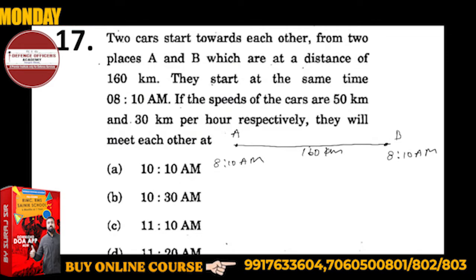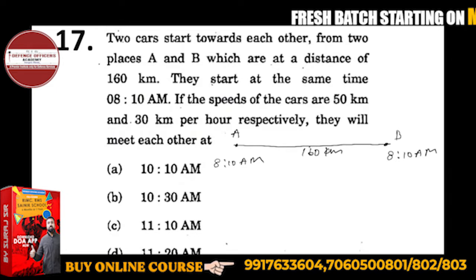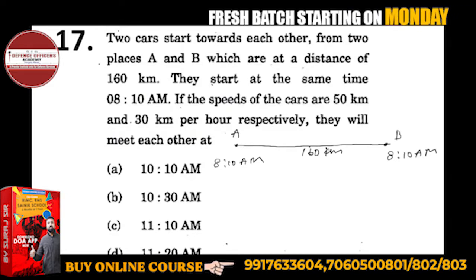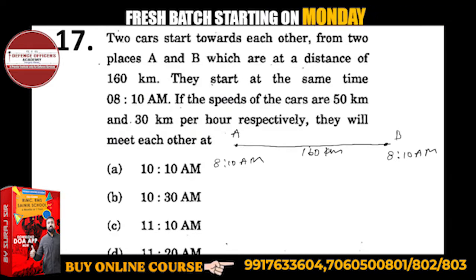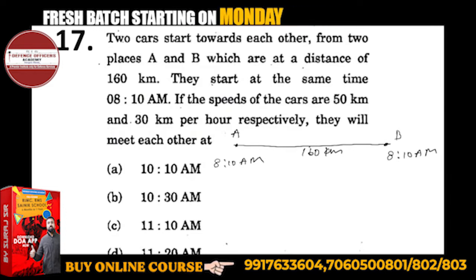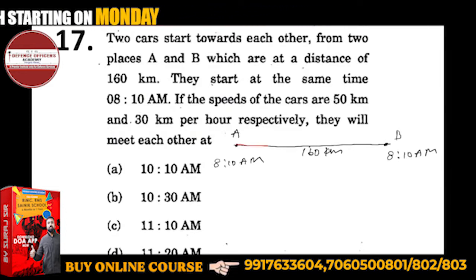They start at the same time. If the speeds of the cars are 50 and 30 km per hour respectively, they will meet each other. You should know that two cars start towards each other. One car is going in this direction and one car is going in this direction.